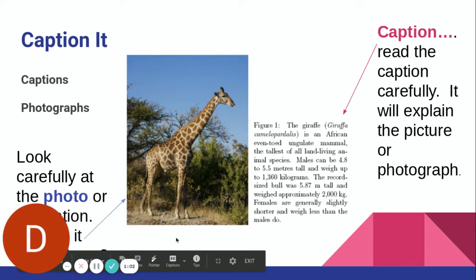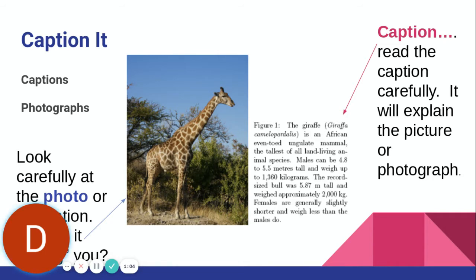The next feature has to do with photographs. Photographs are sometimes called illustrations or pictures that the author puts in the text so you can get a visual image of what the subject is. In this case, they have a photograph of a giraffe. The purpose is so you can see what a giraffe looks like.